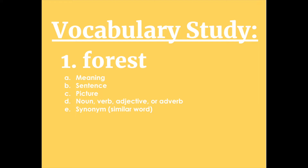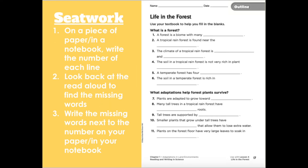Then tell me whether it is a noun, verb, adjective, or adverb. And finally, give me a synonym or a similar word. On a piece of paper or in a notebook, write the number of each line, look back at the read-alouds to find the missing words, and write the missing words next to the number on your paper or in your notebook. Seat work was our final task for today. See you tomorrow.